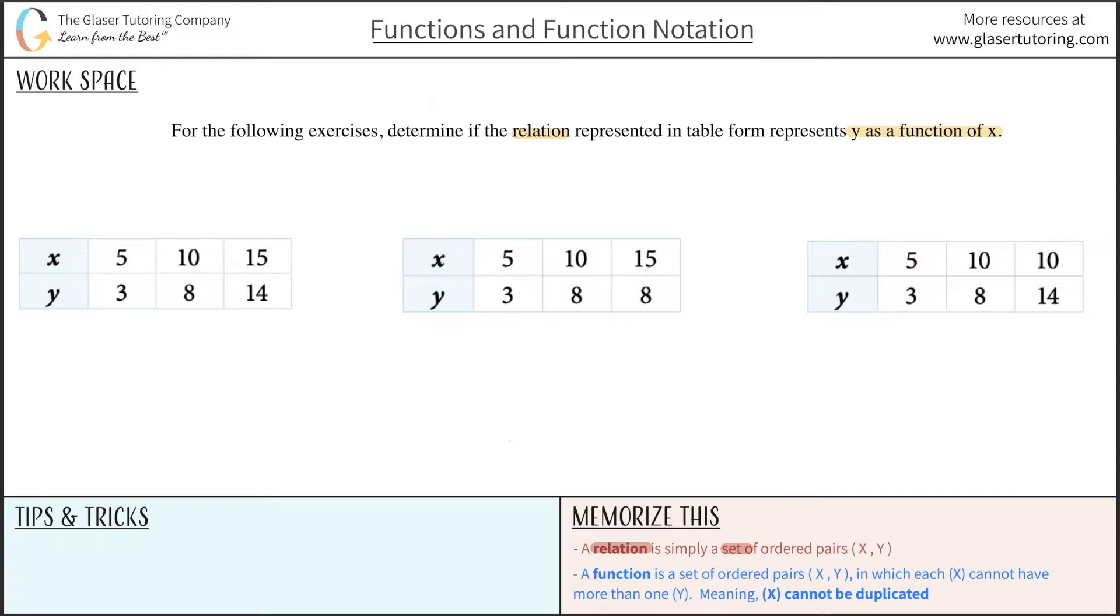So if we look at the first example on the left-hand side, here is an ordered pair 5, 3. They just represented this in table form, but I'm sure you're familiar with this in ordered pair form x, y. Here's another ordered pair, and here's another ordered pair. So at a minimum, this right here is a relation.